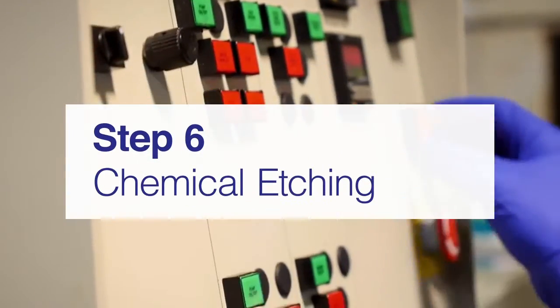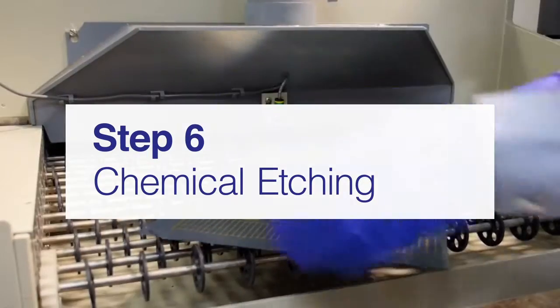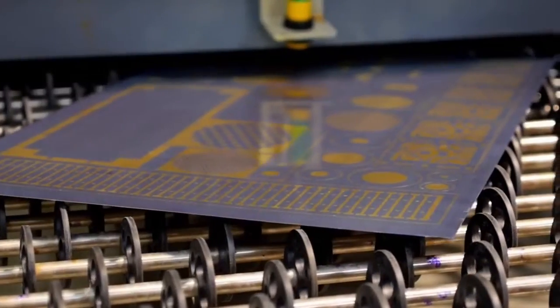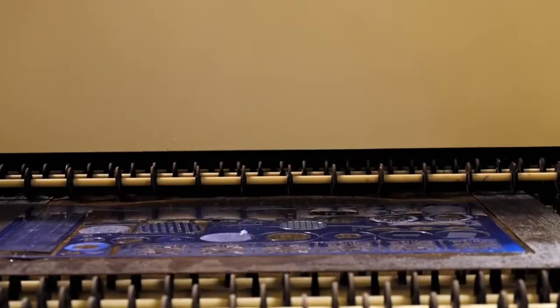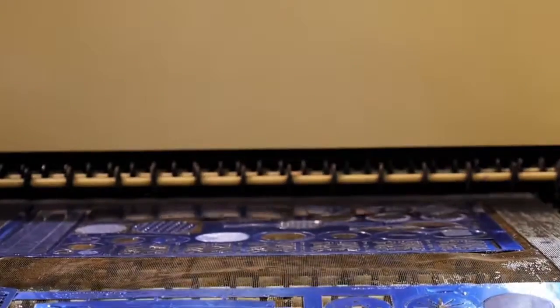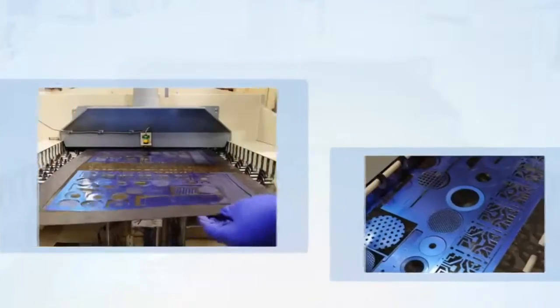The etching process has the sheets going into the etching chambers. Where the resist has been developed away, it leaves exposed material and the exposed material is dissolved by the heated etching. Where the resist has been hardened, that material remains unaffected.